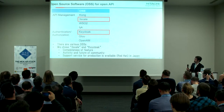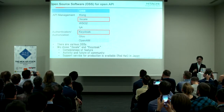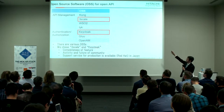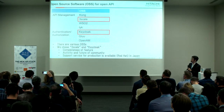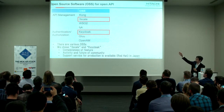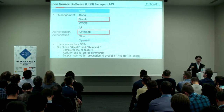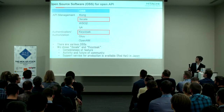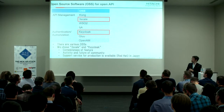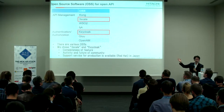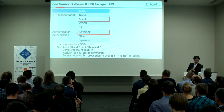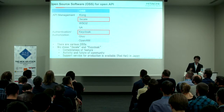There are various open source software solutions around API management and authentication and authorization. We chose 3Scale as API management and Keycloak for authorization and authentication. These two products have a very complete and wide range of features, and the community activity is very high. Because we use open source for a production system, we need vendor support service, which is available in Japan from Red Hat for both 3Scale and Keycloak.